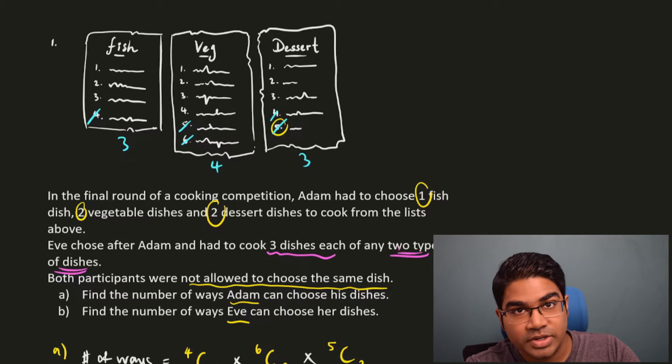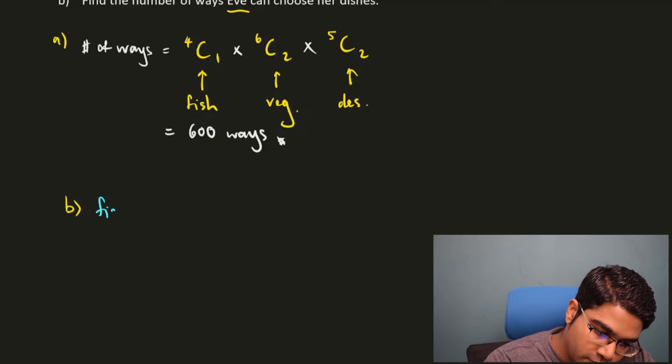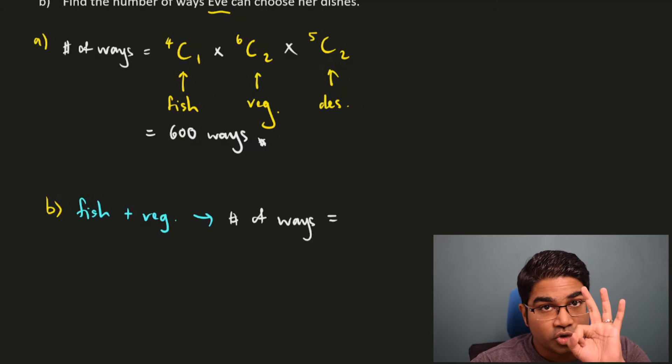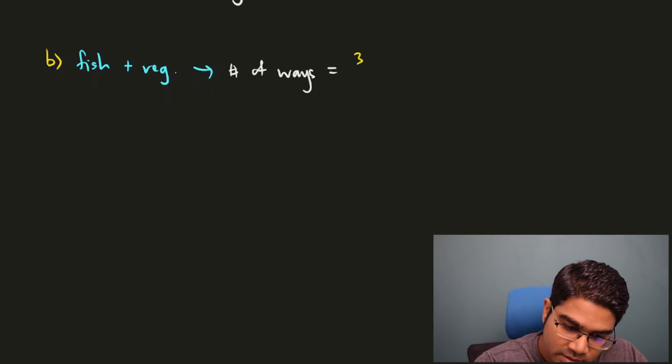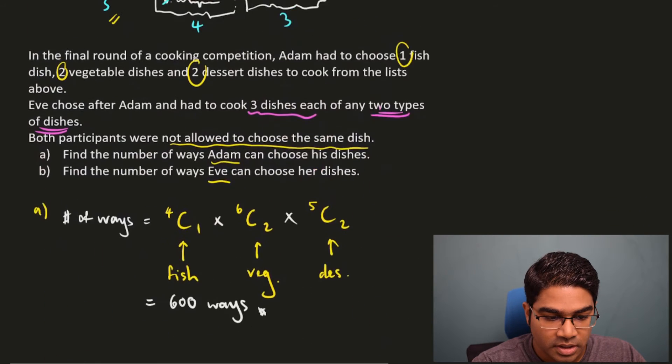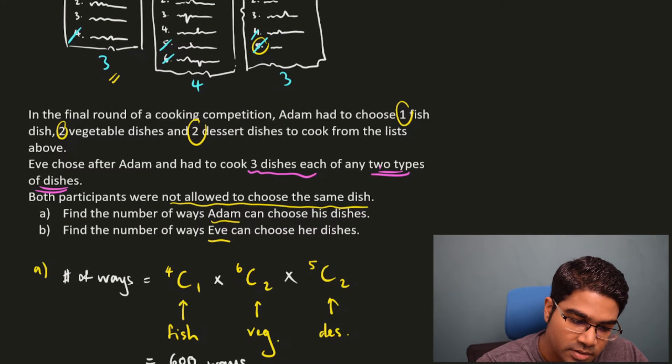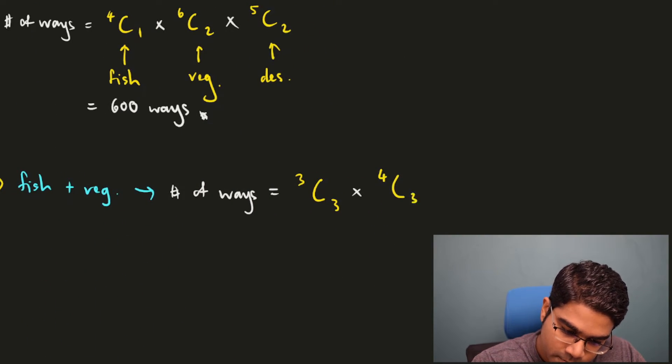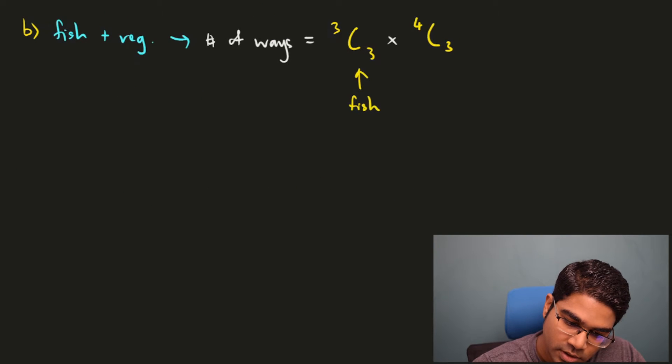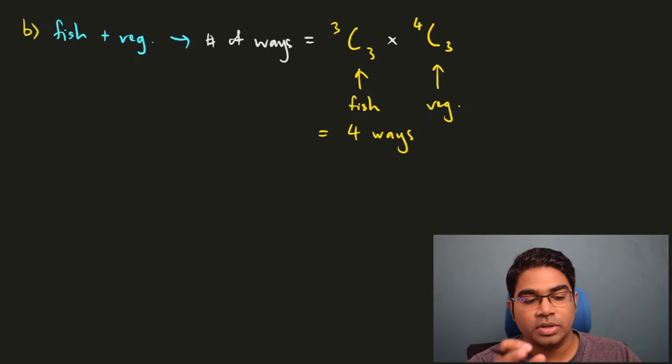Let's look at fish and vegetables first. If Eve chose to do fish and vegetables then the number of ways would be she has to choose three. Fish, her options are three, three from three. So that would be 3C3. And then she has to choose from vegetable dishes. Vegetable dishes she has four choices left. So that would be three from four, so that would be 4C3. This is for the fish and this is for the veg. And this would equal to four ways. So total of four ways to choose fish and vegetables.